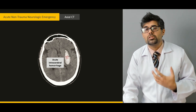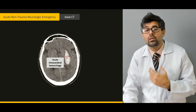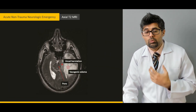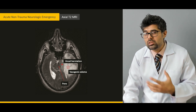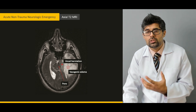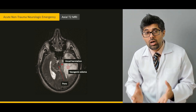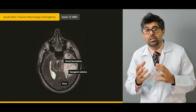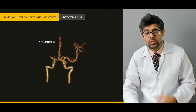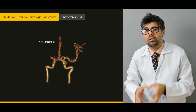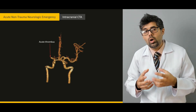We'll go through different examples such as what acute intracerebral hemorrhage is, what other kinds of hemorrhages can happen, and various complications like uncal herniation or subfalcine herniation — what these are, why they happen, and why they are clinically important.